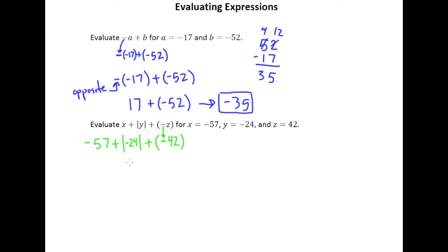So one thing to really make sure you do is to let the first step always be simply writing everything out by substituting the numbers in for the letters. Don't try to put the numbers in and start the process all at once. For example, we know that the absolute value of negative 24 is 24, but don't try to do that at the same time that you're plugging it in. Write out exactly what you have when you plug the numbers in and then worry about evaluating things in the next step.